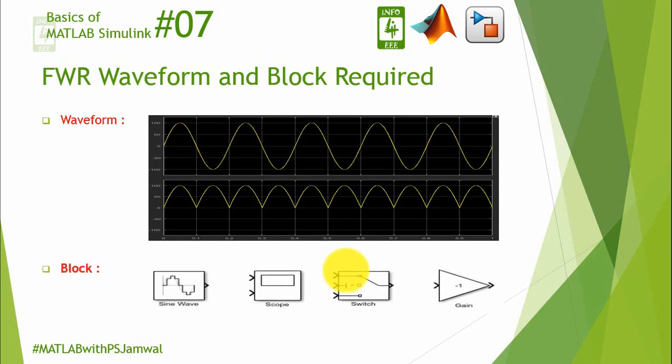To generate this waveform we require four blocks, out of which three are the same which we have used in our HWR waveform. The only thing which is changed is the gain block — that means we are using a gain block in place of the constant block.